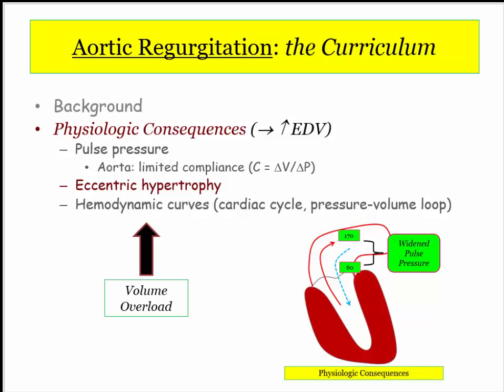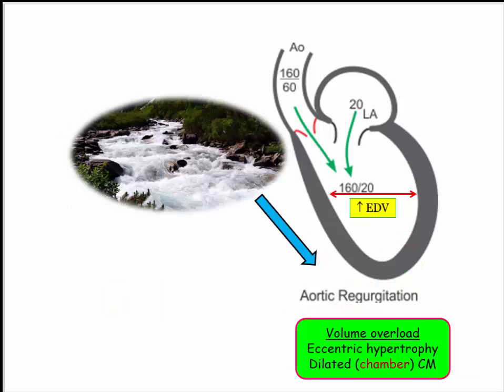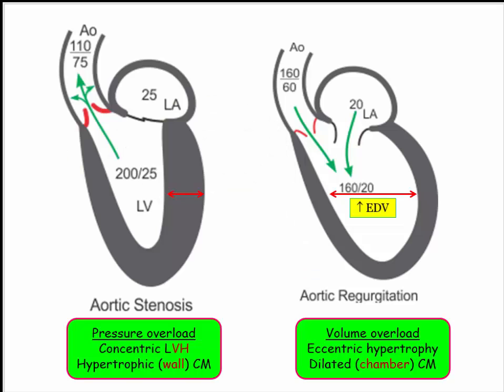Moving on to the next consequence of volume overload, let's review the eccentric hypertrophy associated with aortic regurgitation. Eccentric hypertrophy more specifically refers to the increase in end-diastolic volume associated with aortic regurgitation. Unlike the concentric hypertrophy associated with aortic stenosis, in eccentric hypertrophy the LV chamber volume increases in size. Concentric hypertrophy has a thickened wall, while eccentric hypertrophy has an enlarged chamber — a major compare and contrast.